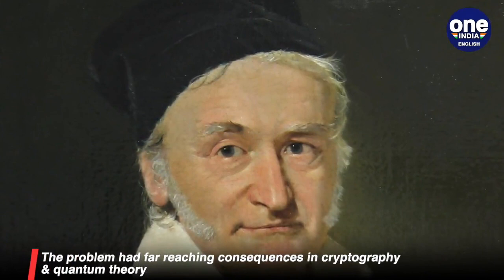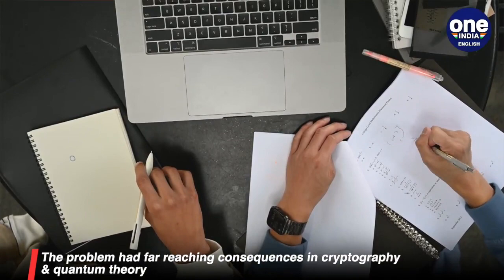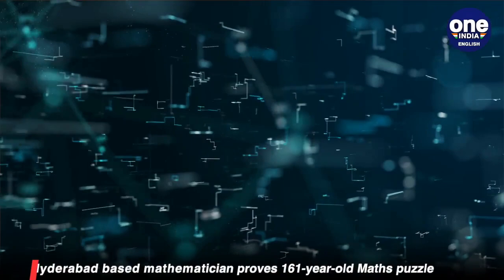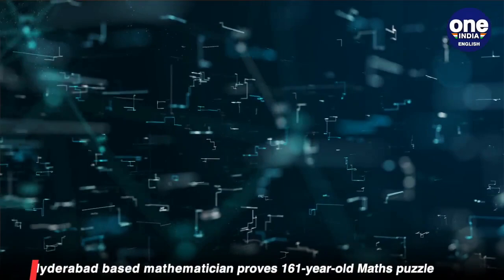The formula deals with understanding the distribution of prime numbers. A solution could have far-reaching consequences in cryptography, the practice of secure communications that can only be decoded by the intended recipient, as well as in quantum theory.